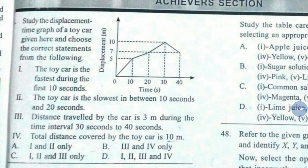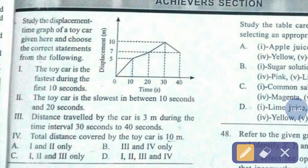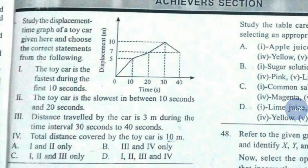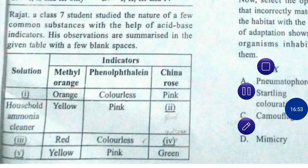Question number 46. Study the displacement-time graph of a toy car given here and choose the correct statements from the following. The correct answer is option number C — first, second and third only.